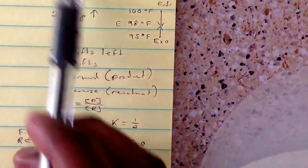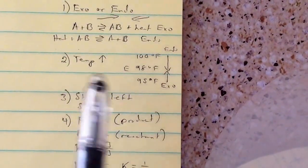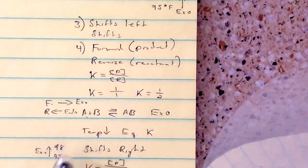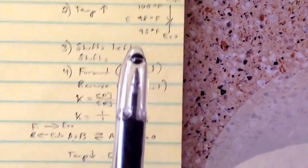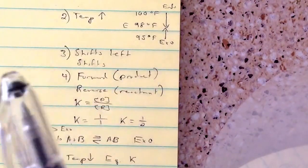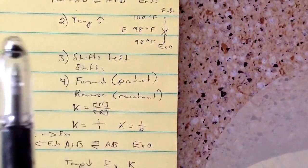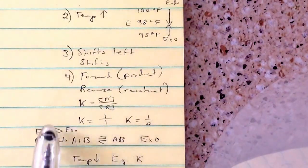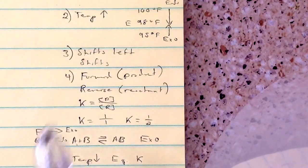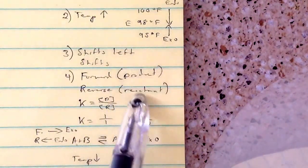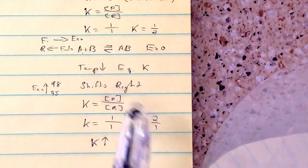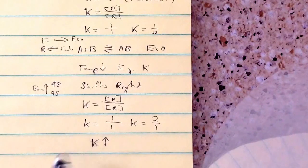To summarize: first find out if it's exo or endothermic. Then figure out the opposite for temperature — if temperature is decreasing, you want exothermic; if increasing, you want endothermic. Once you know the direction, that tells you which way equilibrium shifts: forward means right, reverse means left. Then use the definition of K — if forward and product-favored, products increase and K increases. Practice this and it'll become easy.